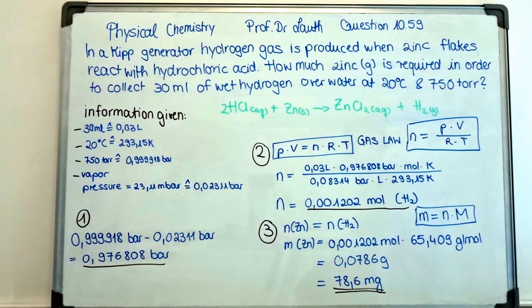First, we are subtracting 0.02311 bar from 0.999918 bar in order to determine the correct pressure which will be relevant for the calculation, which is 0.976808 bar.